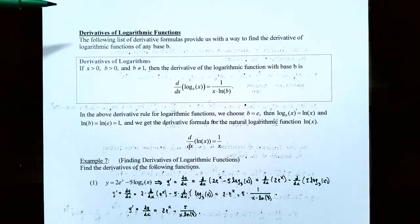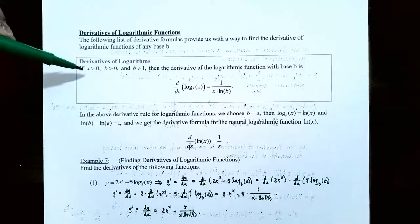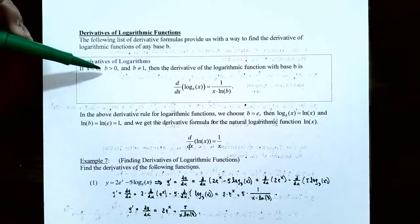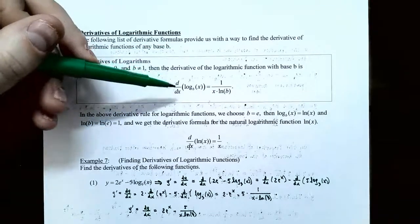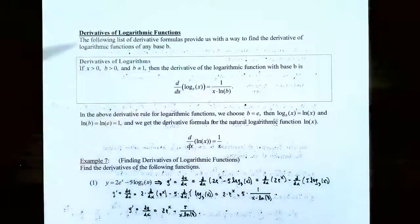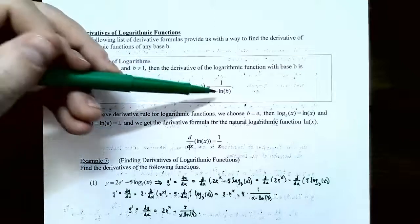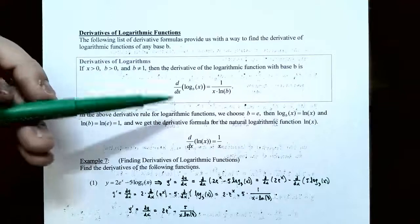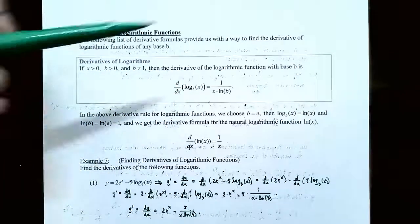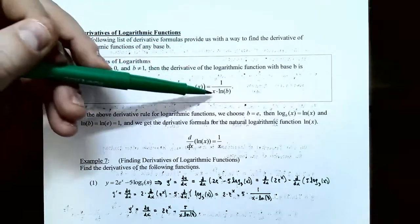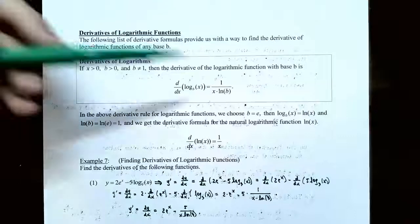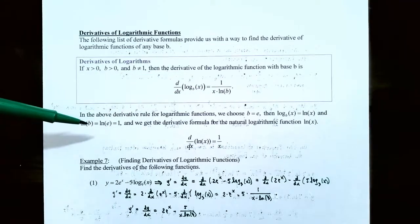The following list of derivative formulas will provide us a way to find the derivative of logarithmic functions of any base b. Remember, the base must be a positive number but not equal to 1 for a logarithm. If x is positive — because x is the argument of the logarithm — and b is the base, so it must be positive and cannot be 1, then the derivative of log base b of x is 1 divided by x times the natural log of the base. If we choose the base to be e, we get the natural logarithm, and since natural log of e is 1, the formula simplifies: the derivative of natural log of x is simply 1 divided by x.